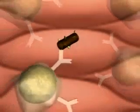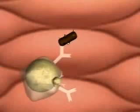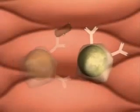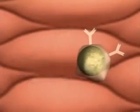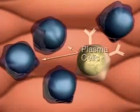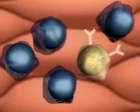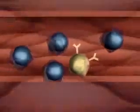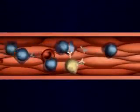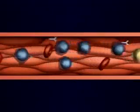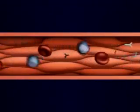These B cells now divide. Some continue to divide, producing many plasma cells. Plasma cells secrete large quantities of antibodies into the bloodstream. This division of only the appropriate B cells is called clonal selection.